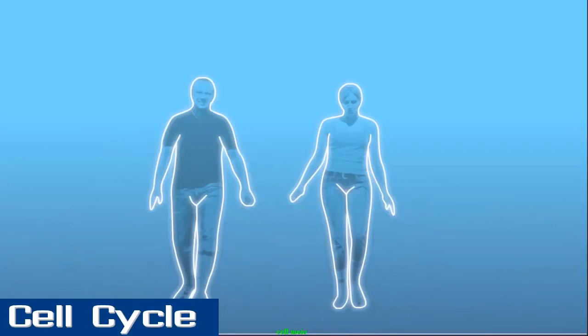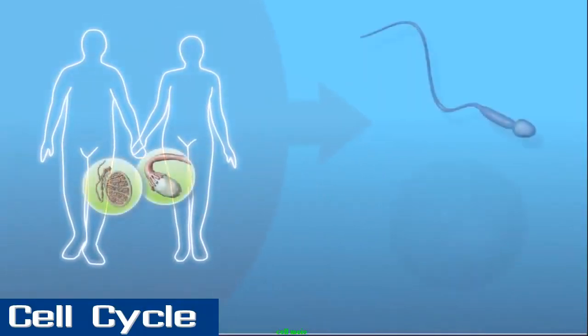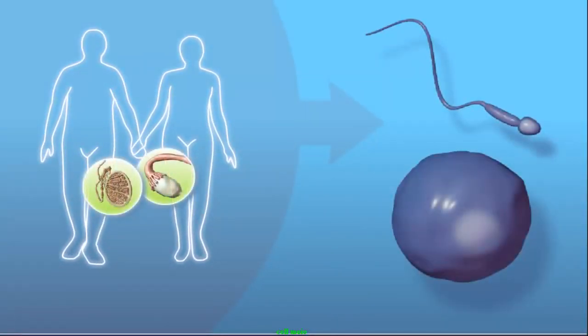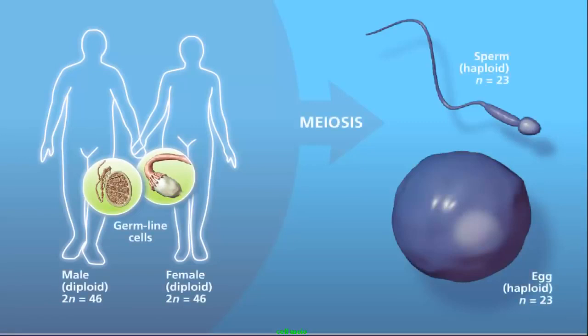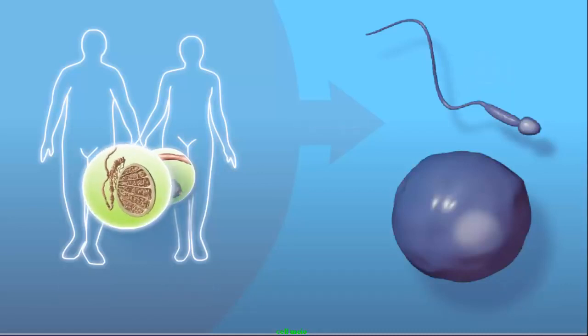Meiosis is the process by which haploid cells are produced from a diploid cell. For this to occur, the chromosomes must be correctly sorted and distributed in a manner to create genetically unique cells with half the number of chromosomes as the original cell.